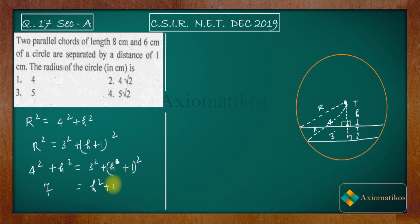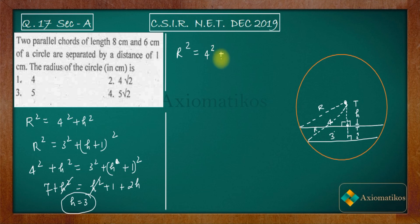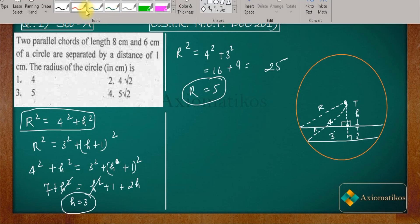Expanding: 16 + h² = 9 + h² + 1 + 2h. The h² terms cancel, giving 16 = 10 + 2h, so 2h = 6 and h = 3. Now substituting back: r² = 4² + 3² = 16 + 9 = 25, therefore r = 5 centimeters. This is the radius of the circle.